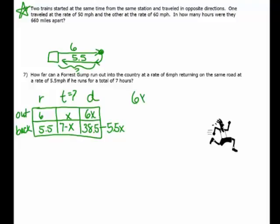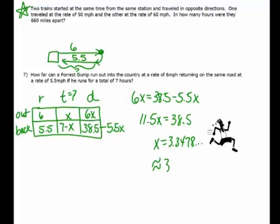So 6x has to be equal to 38.5 minus 5.5x. Moving my 5.5x over and then dividing, I get x is 3.3478. It kind of goes on. It's about 3.3. So he runs out into the country 3.3 at 6 miles per hour, and then he runs back a little bit slower, so it would be 2.7 at 5.5.